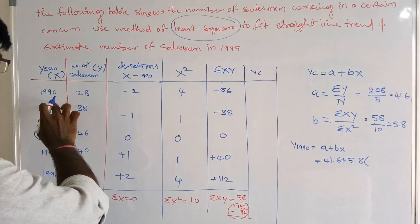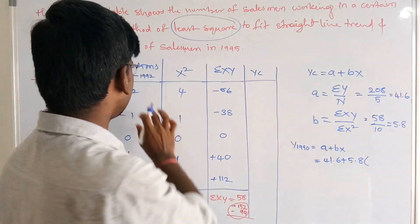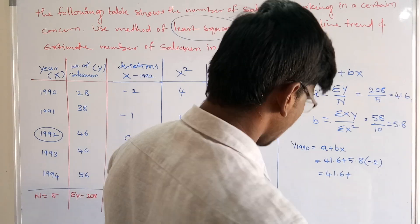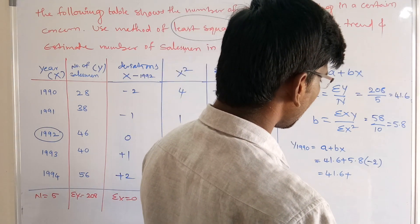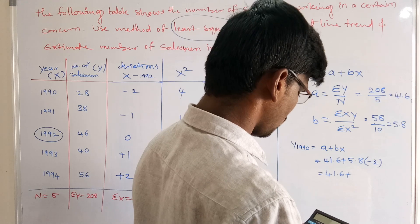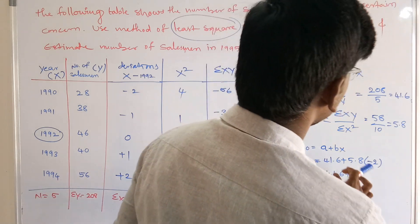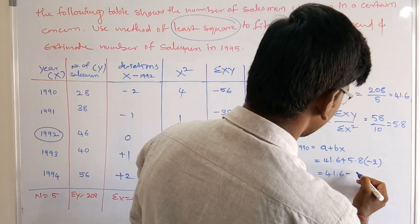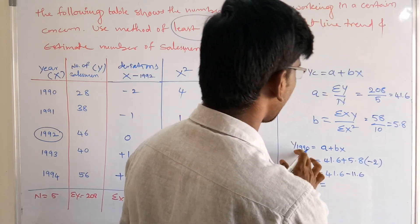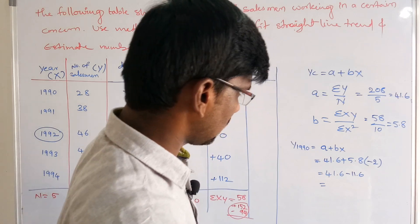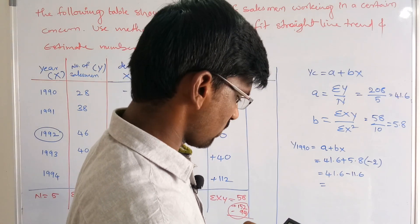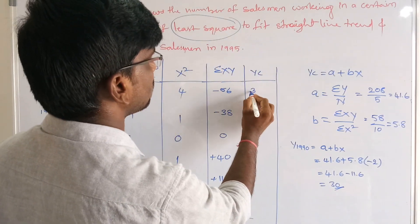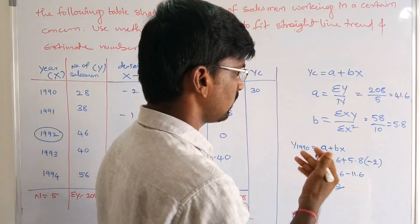The trend value for 1990: x = -2, so yc = 41.6 + 5.8 × (-2) = 41.6 - 11.6 = 30. So the trend value of 1990 is 30.